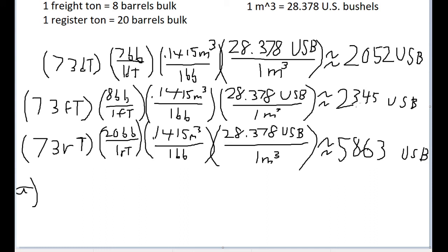So let's take 2345 U.S. bushels for the number of bushels in 73 freight tons and subtract the number of U.S. bushels in 73 displacement tons from that so that we can get how many extra bushels we would have shipped mistakenly. So that's going to be 2345 U.S. bushels minus 2,052 U.S. bushels.